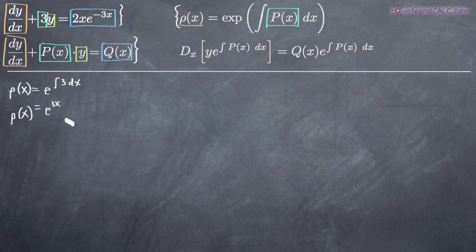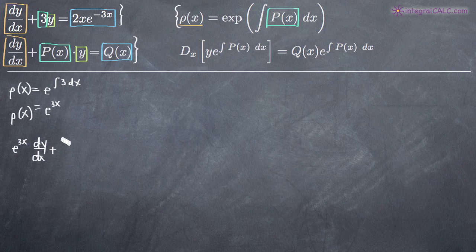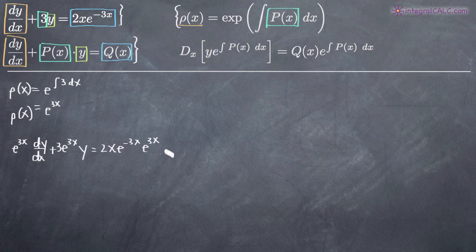Once you find the integrating factor, you need to multiply it by both sides of your original linear differential equation — every single term on both sides. So what we get is e to the 3x times dy/dx, plus e to the 3x times 3y, equals 2x times e to the negative 3x times e to the 3x.